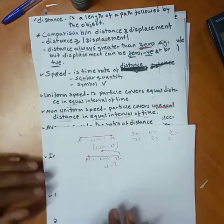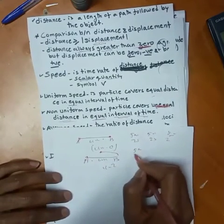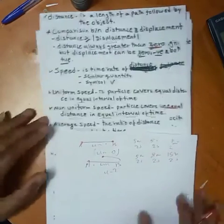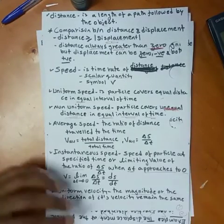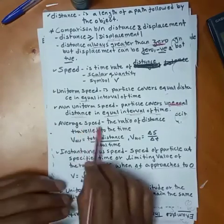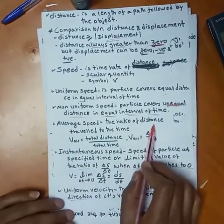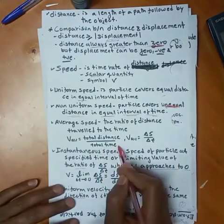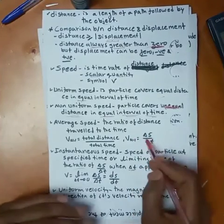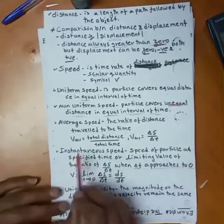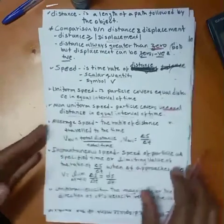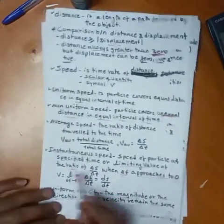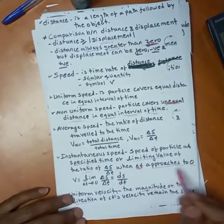The average speed is the ratio of the total distance traveled to the total time taken — symbolically, V average equals change in s per change in time. Instantaneous speed is the speed of a particle at a specified instant, defined as the limiting value of the ratio of change in s per change in time as change in t approaches zero.